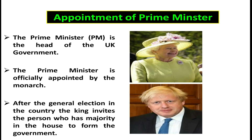Appointment of Prime Minister. The British Prime Minister is the head of the UK government, usually the leader of the largest party in government or leader of the party who wins an election. The Prime Minister is officially appointed by the monarch — the Crown, King or Queen. After the general election in the country, the King invites the person who has a majority in the House to form the government. We can also say the choice of the Prime Minister is automatic.